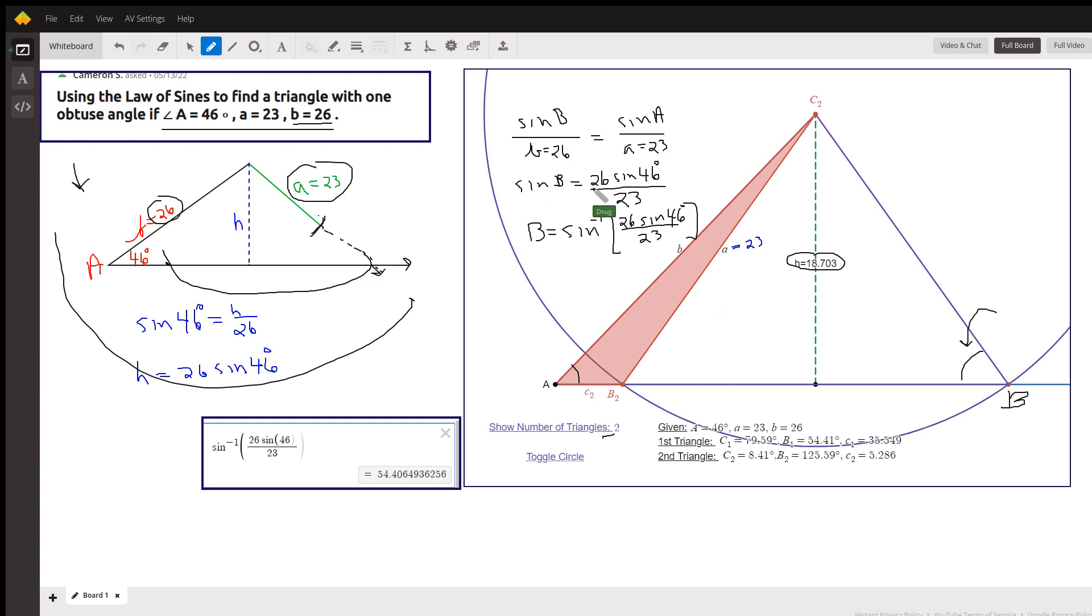So multiplying both sides by 26, sine of B equals this expression, which is actually the altitude divided by 23. And so angle B is the angle that has a sine of that number, or B is the inverse sine, the angle that has that as a sine.